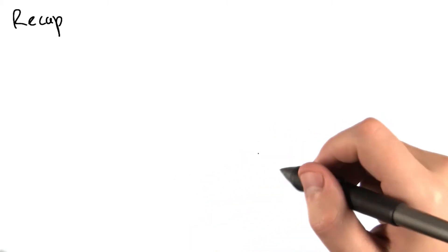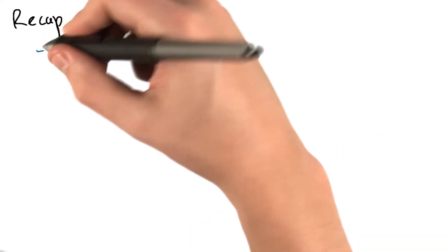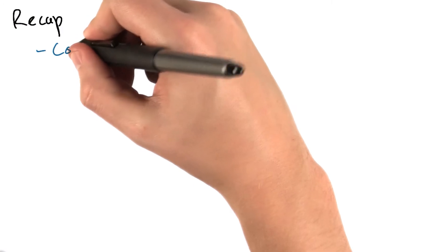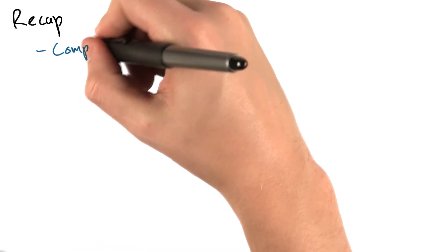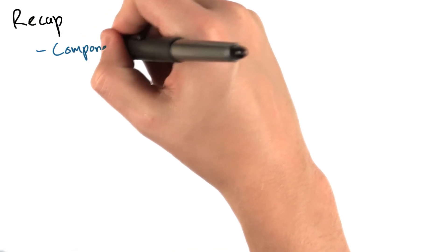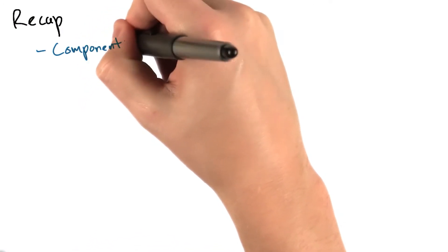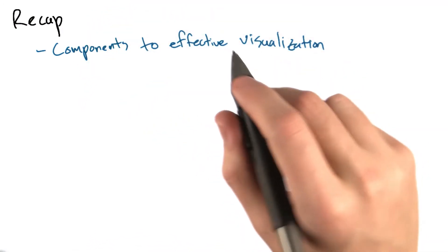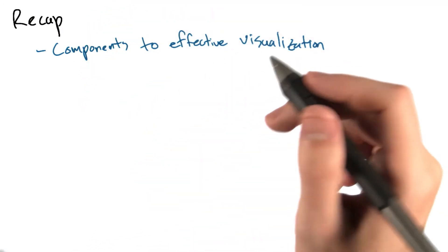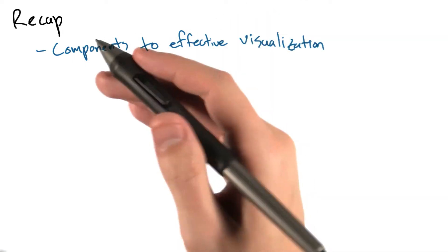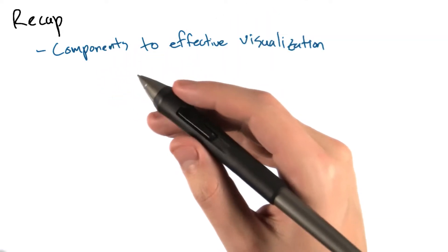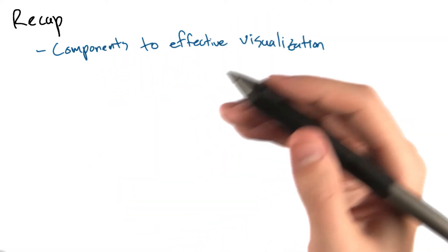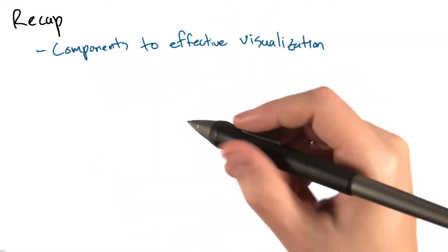All right, so why don't we recap what we've discussed in this lesson. First, we discussed the components to an effective information visualization. They were visual cues, the coordinate system, the scale and data types, and the context.